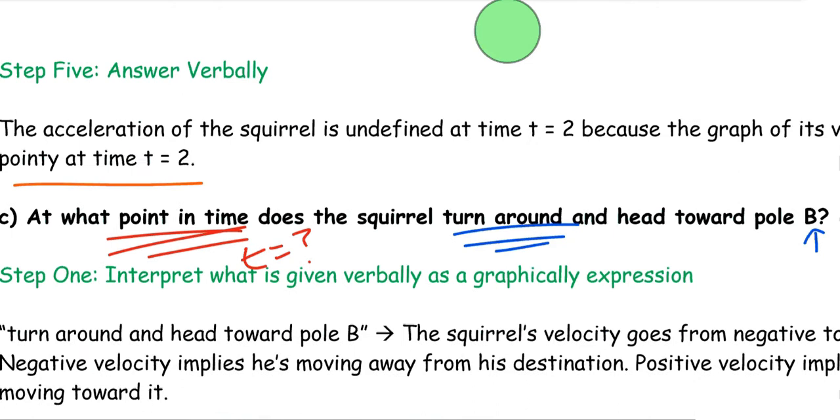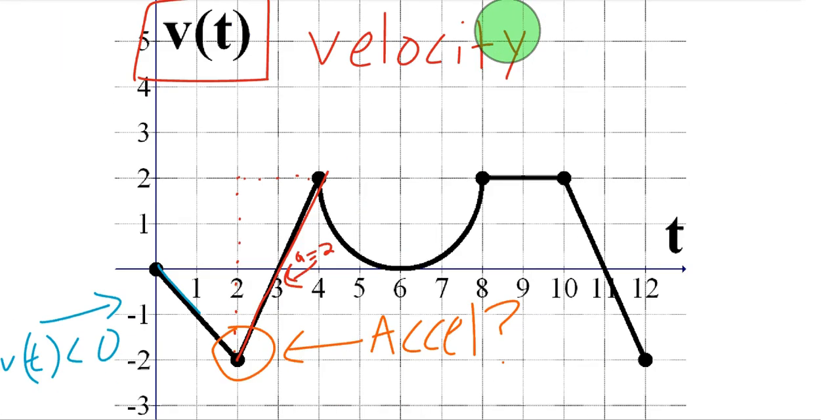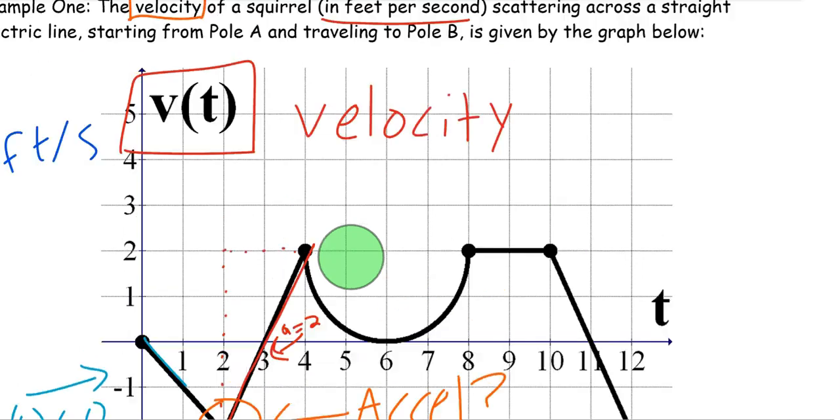So when we go back and look at the graph of this squirrel's velocity, and remember, this is the velocity graph. For example, at time T equals 3, its velocity is 0. At time T equals 5, it looks like about a quarter feet per second. The units are feet per second. We read that in the original problem up here.